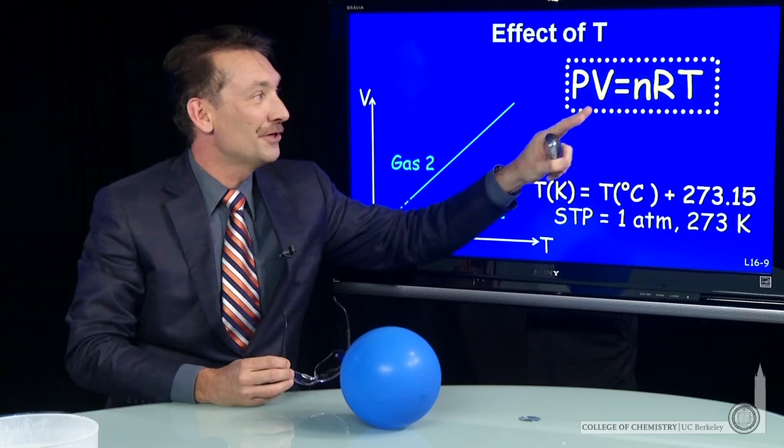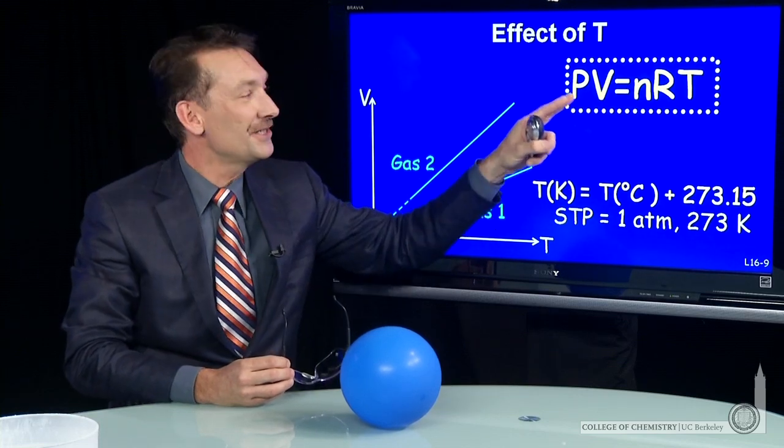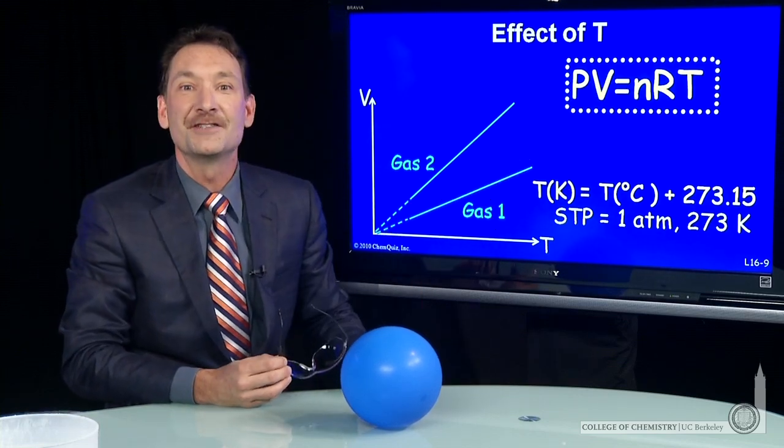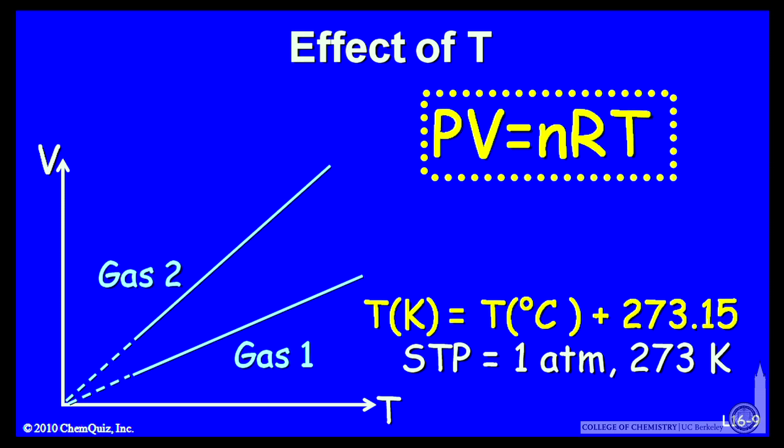If I change temperature, the value of this constant changes, and pressure times volume is a new constant. Now, this occurs for all gases that behave ideally. And interestingly, I can treat ideal gases in little samples.